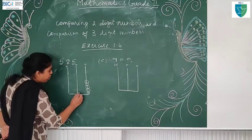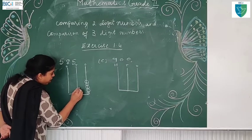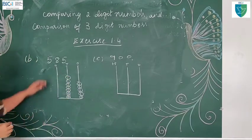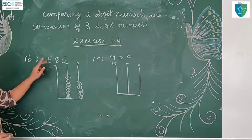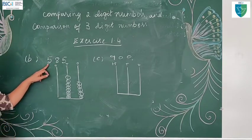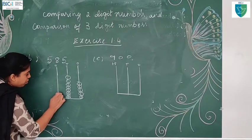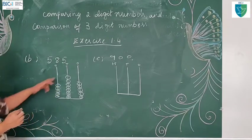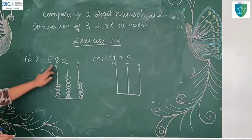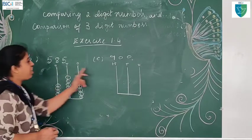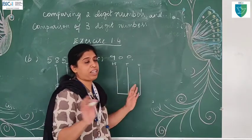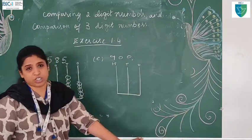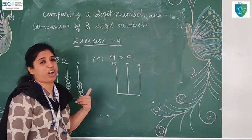I should draw 8 lines in the tens space. In the hundreds space, how much? 5. You have to draw 5 lines in the ones space, 8 lines in the tens space, and 5 lines in the hundreds space. For 990: in the ones place — 0, nothing should be drawn. In the tens place also — 0, nothing should be drawn. In the hundreds place — 9 lines.